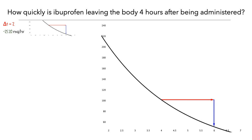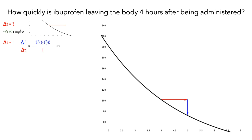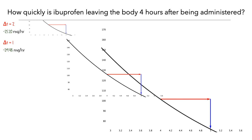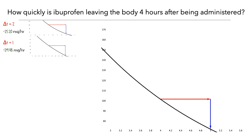Now let's look at what would happen if we used a smaller delta t. Here, delta t is equal to 1. We can compute the average rate of change over this interval by dividing the change in f by the change in t. So when delta t is 1 hour, the average rate is –29.48 mg per hour. Let's zoom in a bit to see this better. We'll keep this image on the screen to compare with some other approximations.